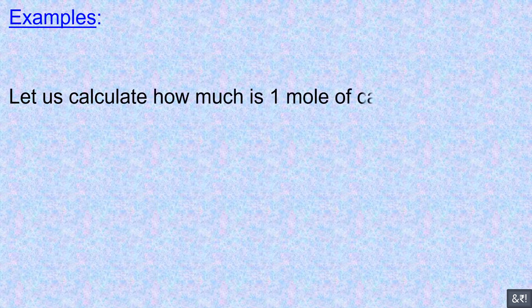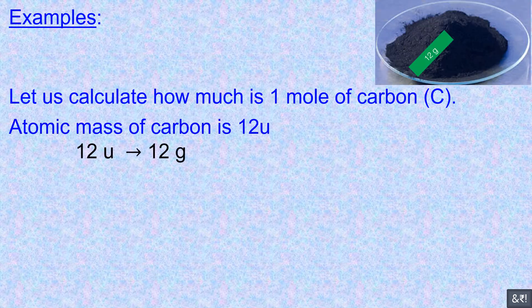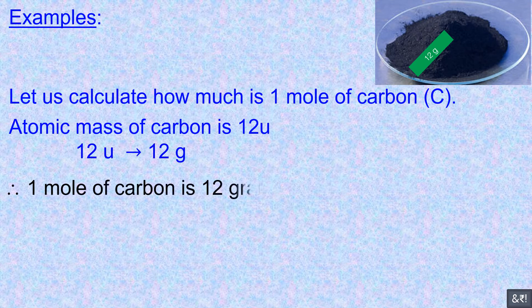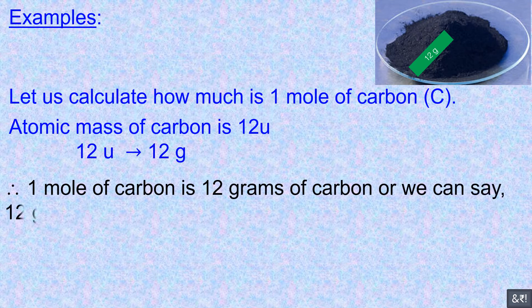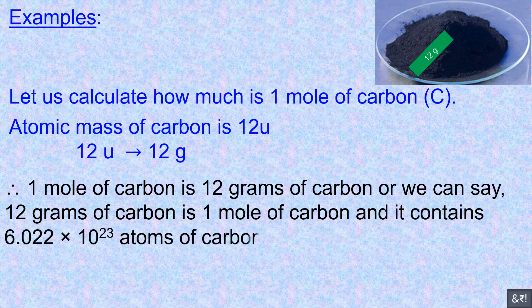Let us calculate how much is one mole of carbon. Atomic mass of carbon is 12 U. 12 U implies 12 grams. Therefore, one mole of carbon is 12 grams of carbon, or we can say 12 grams of carbon is one mole of carbon, and it contains 6.022 × 10²³ atoms of carbon.